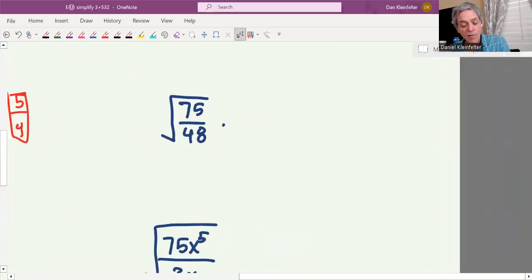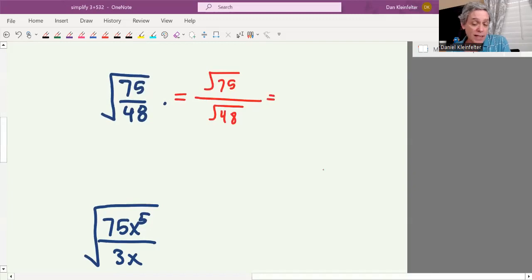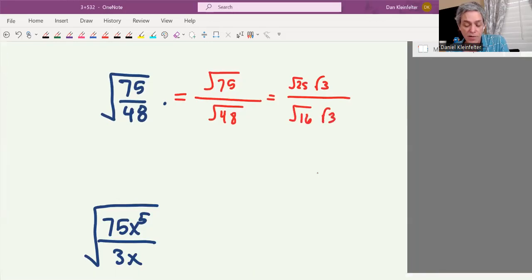75/48 is going to take a little more care because neither 75 nor 48 is a perfect square, but that's okay. This will be the square root of 75 divided by the square root of 48, and we just practiced how to do these. 75 is 25 times 3, so we'll have the square root of 25 times square root of 3. For 48, that is the square root of 16 times the square root of 3. The square roots of 3 will divide out. The square root of 25 will be 5, the square root of 16 will be 4.